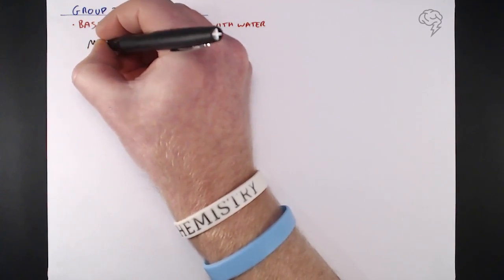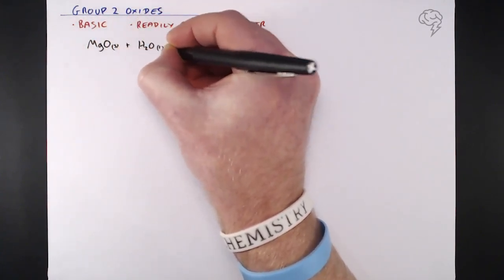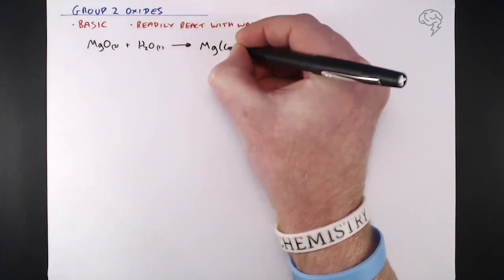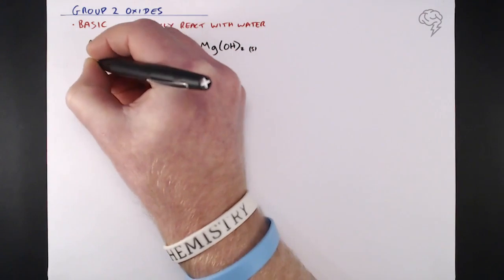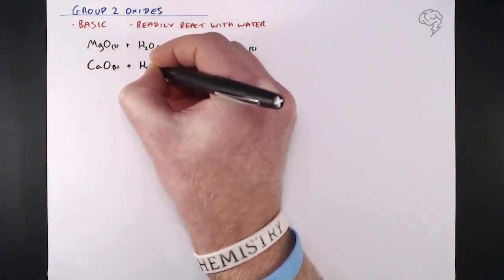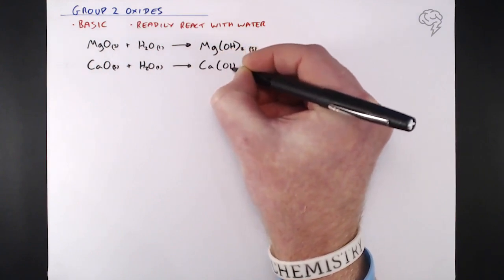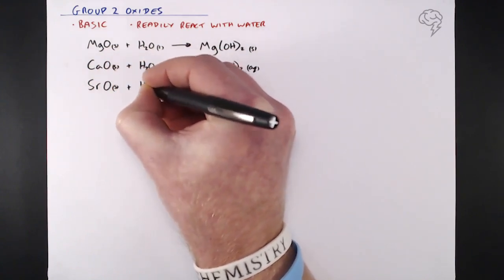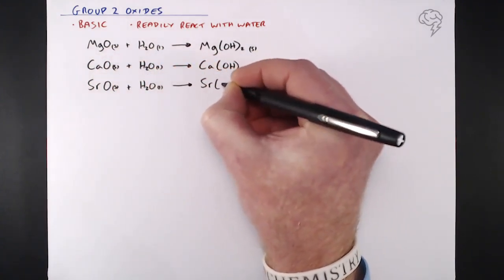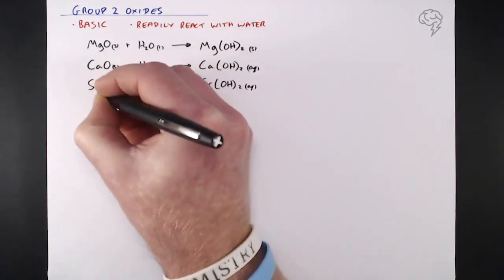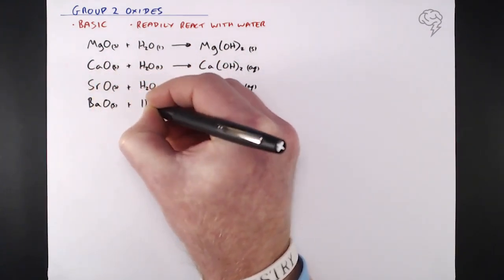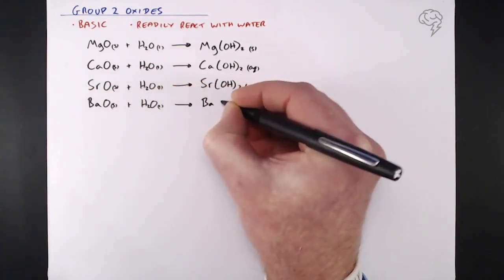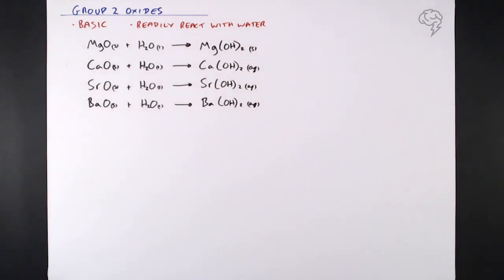Magnesium oxide plus liquid water gives magnesium hydroxide, Mg(OH)₂ — write that as solid. Calcium oxide plus water gives calcium hydroxide, aqueous. Strontium oxide plus water gives strontium hydroxide, aqueous. Barium oxide plus water gives barium hydroxide, aqueous. The only difference is that magnesium hydroxide is written as solid because it is very insoluble — only partially soluble in water.